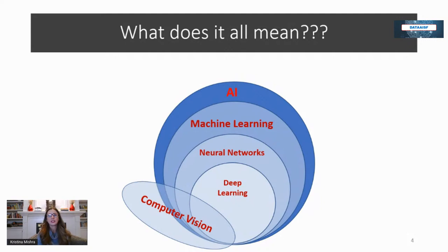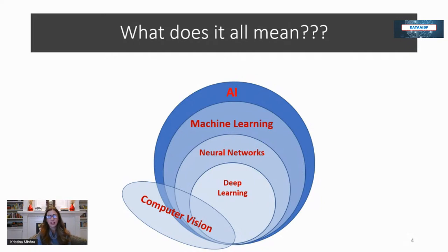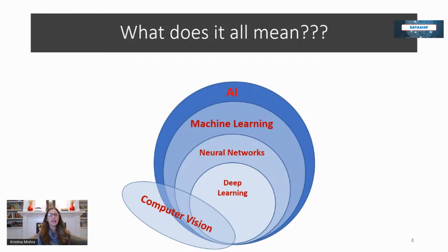Moving on to neural networks — this is a system that mimics the human brain. Things go in, you learn, you learn from your learning, and you give an output. A simple neural network may have three layers: an input layer, a hidden layer, and an output layer, with weights that connect everything and facilitate learning. Then we have deep learning — the 'deep' refers to the depth of layers in a neural network. A deep learning neural network will have more than one hidden layer, giving it the capacity to learn more and learn from its own mistakes. Think of it like a toddler that touches a plug and gets a small shock versus an adult with a much deeper understanding of electricity.